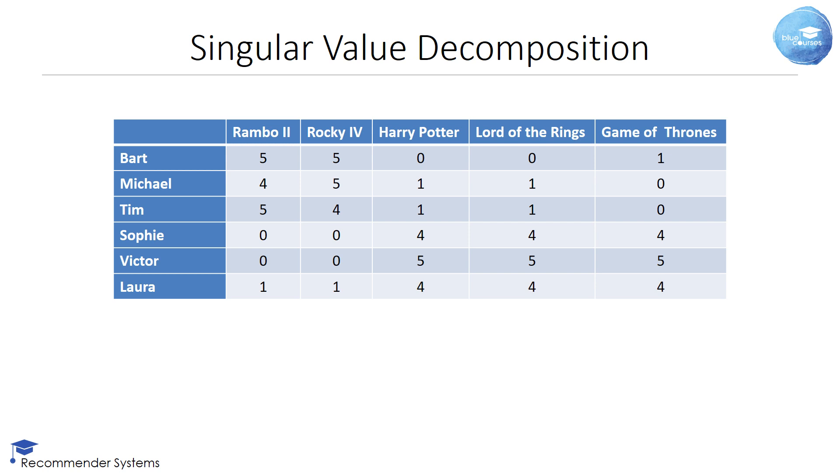Bart, Michael, and Tim especially like action movies such as Rambo 2 and Rocky 4 and are not too fond of fantasy movies such as Harry Potter, Lord of the Rings, and Game of Thrones. Sophie, Victor, and Laura don't like action movies, but they do like fantasy movies. You can see that the Harry Potter and Lord of the Rings columns contain identical values, so the rank of this matrix is 4.